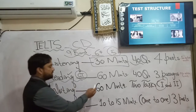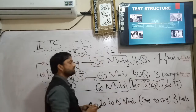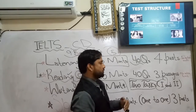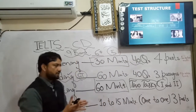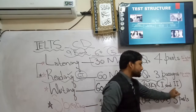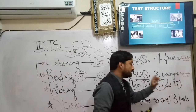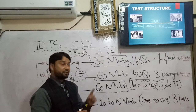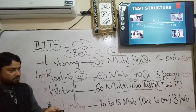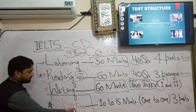In writing, you will be given 60 minutes and there will be two tasks: Writing Task 1 and Writing Task 2. You have the freedom to choose which task to do first. I recommend doing Writing Task 2 first, because Task 2 carries more marks — six bands — while Writing Task 1 carries only three bands. So prioritize Task 2.